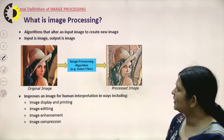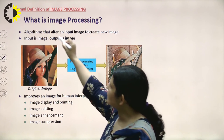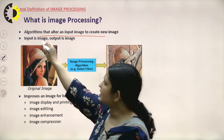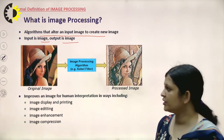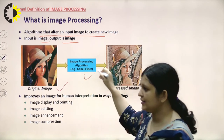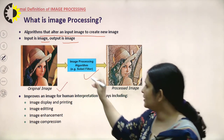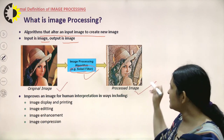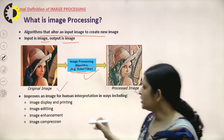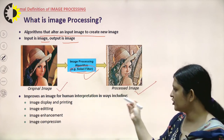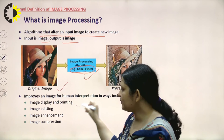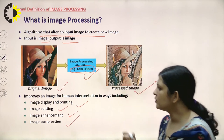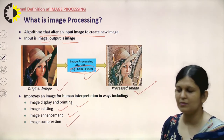The formal definition: image processing is used for altering an image to create new images, where both input and output are images. For example, applying the Sobel filter to an original image gives a processed edge-detected image. It improves an image for human interpretation and is used for image display, printing, image editing, image enhancement, and image compression.